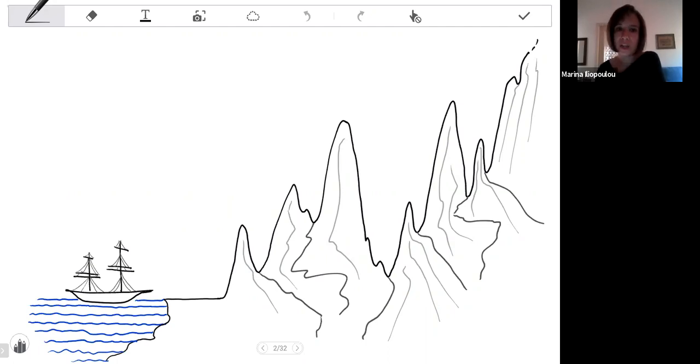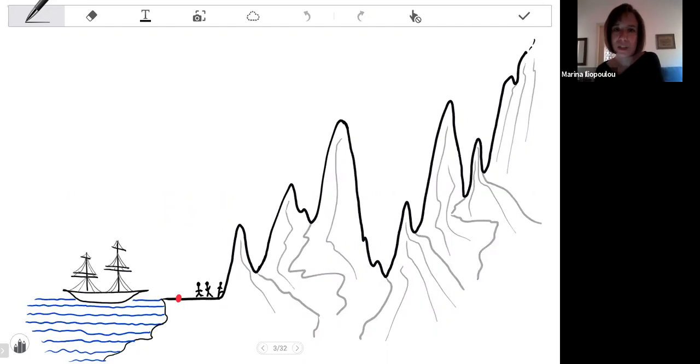They start their trip at this red point here at sea level and they choose a specific direction that they have agreed on in advance and they walk towards that direction. They walk straight up, straight down as the land takes them, they don't turn left or right.